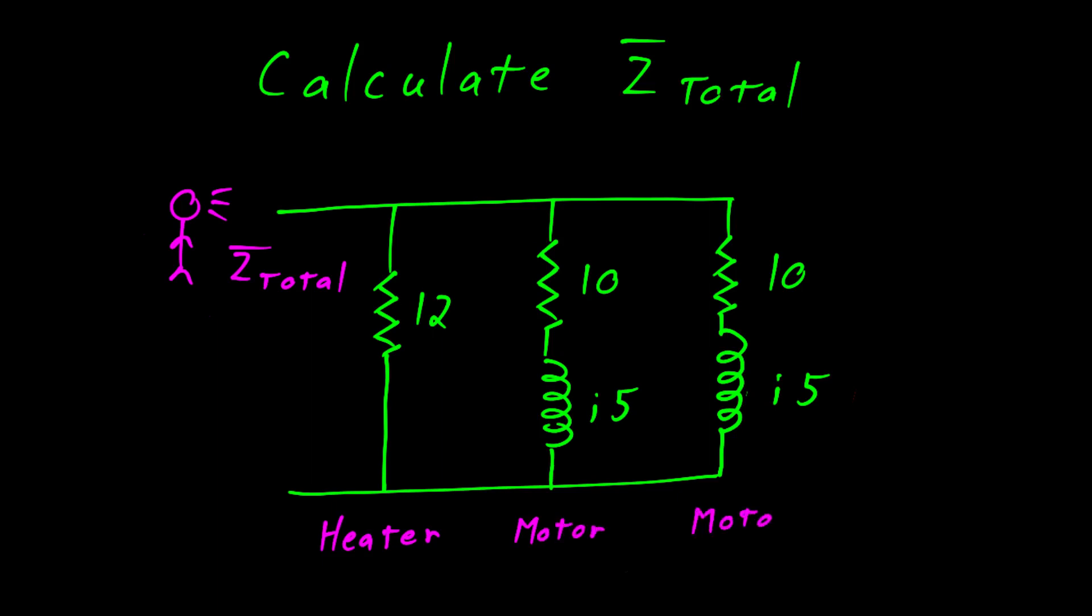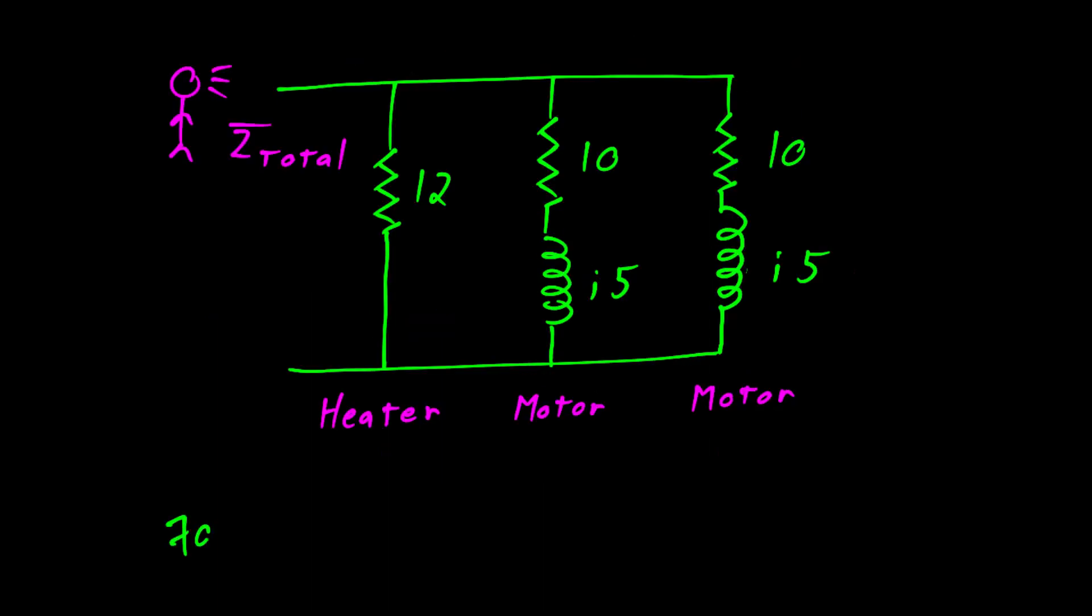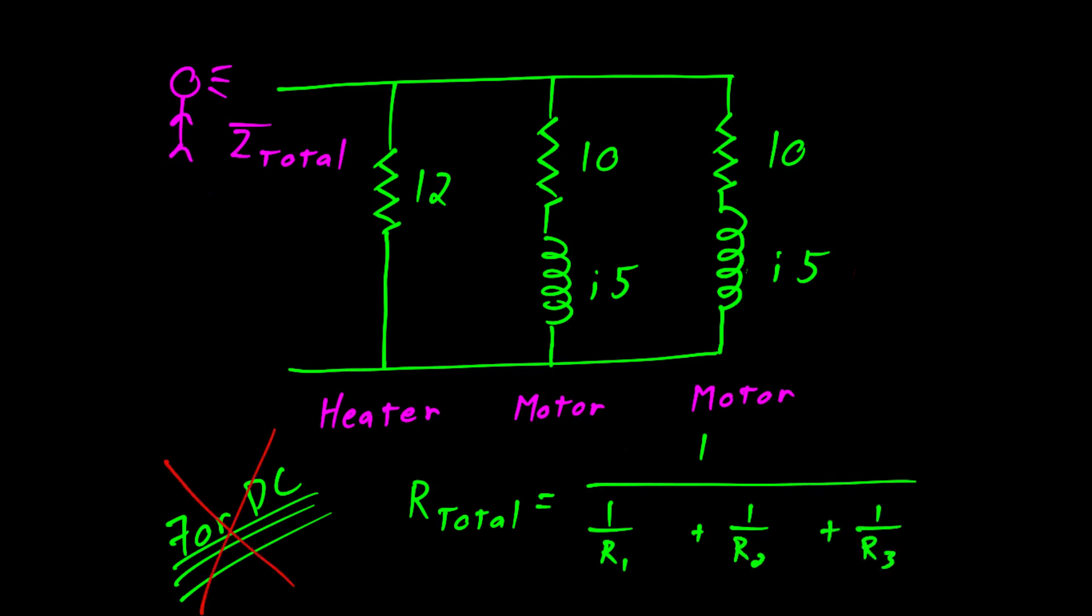Were this a DC problem with only resistances, you would know what to do with this. But this is not a DC circuit. This is an AC circuit. So instead of resistance, we have impedance.